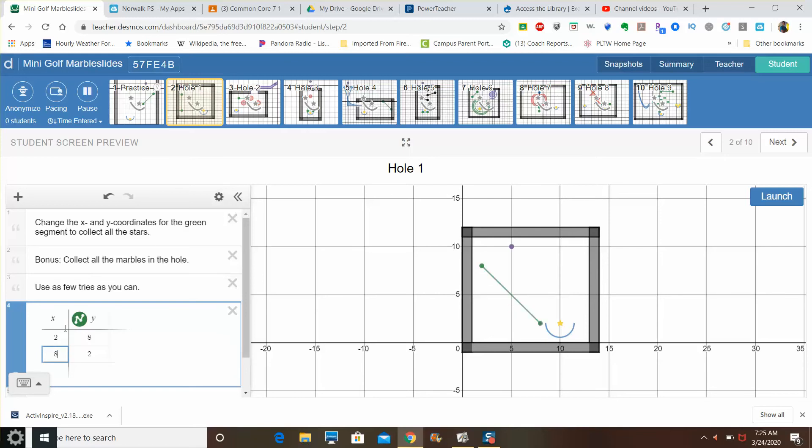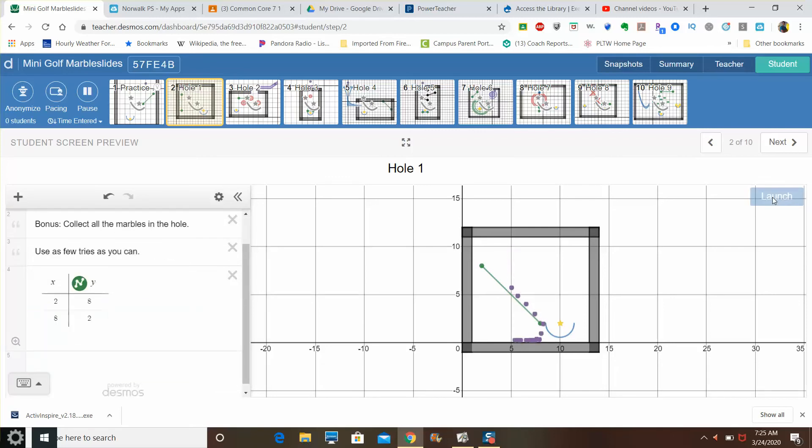How about eight, two? Eight, two might work. Let's try that. So if I bounce off my balls, okay, not quite. So it didn't work like that. But if I try maybe nine, two, maybe that will put all the balls into the hole. And it does.